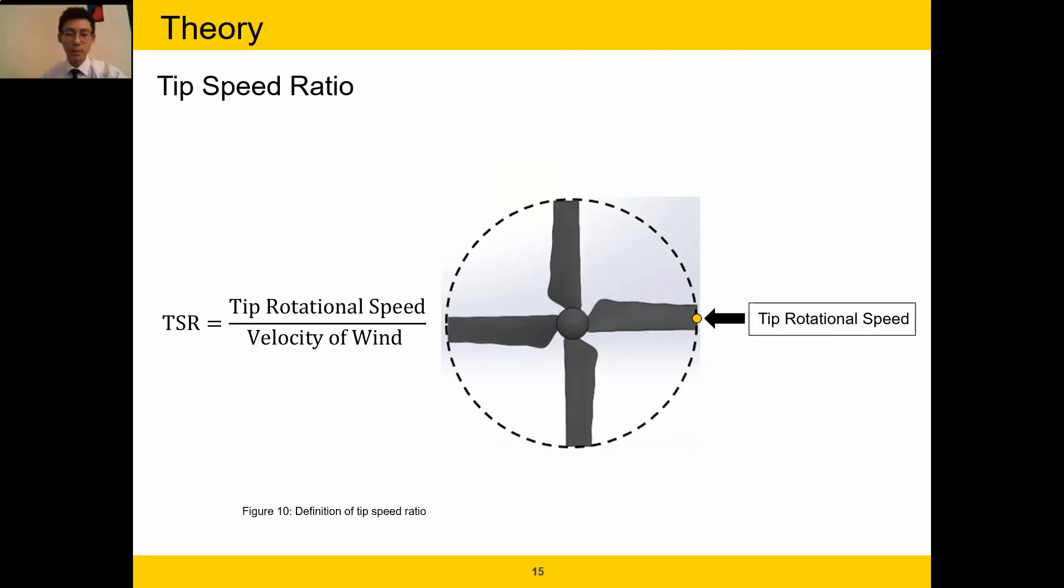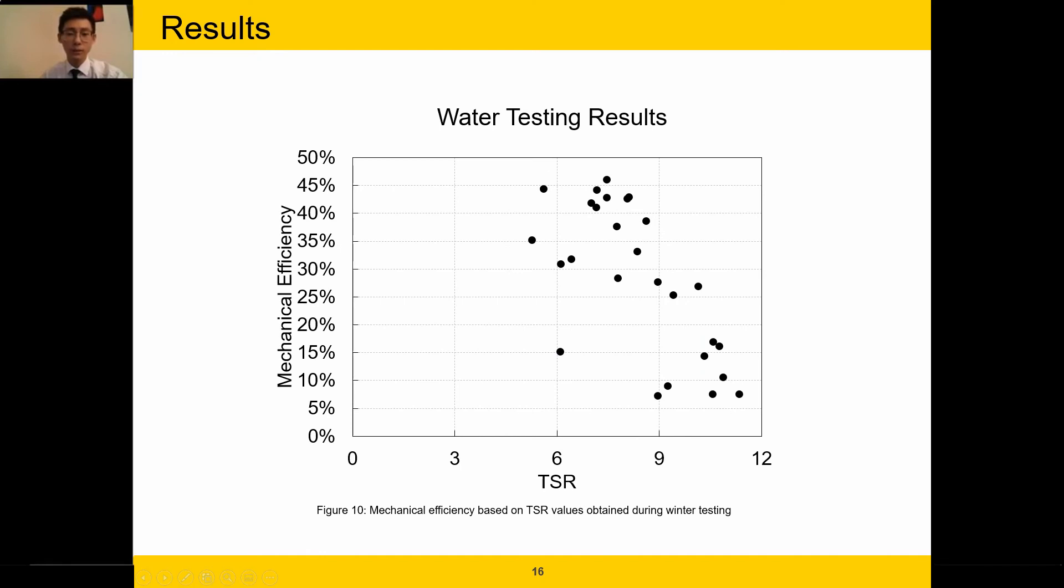Before we get into the experimental results, it is crucial to understand TSR. TSR is the tip speed ratio. It is the ratio between the turbine tip rotation speed over the wind velocity. The higher the tip speed ratio, the faster the rotation of the turbine. Here we have a mechanical efficiency versus TSR graph. The TSRs range from 5 to 12, where the mechanical efficiency ranged from 7 to 46 percent. And to put this into perspective, the highest theoretical mechanical efficiency of a turbine, also known as Betz limit, is around 59 percent efficient.